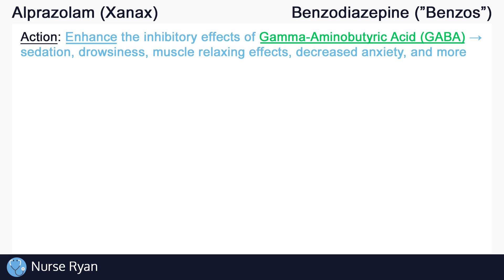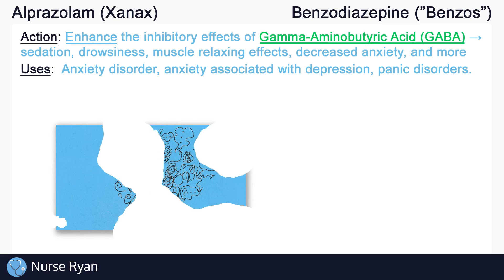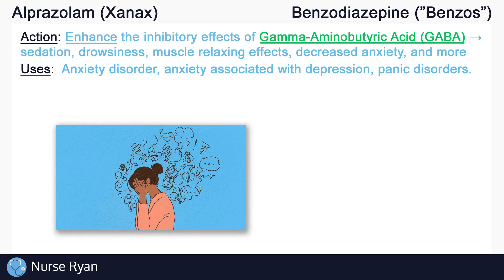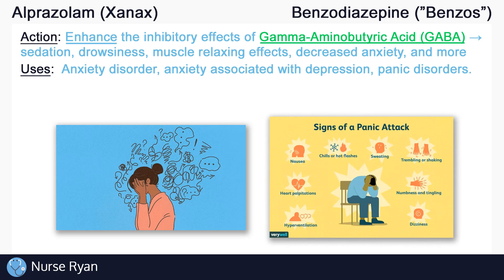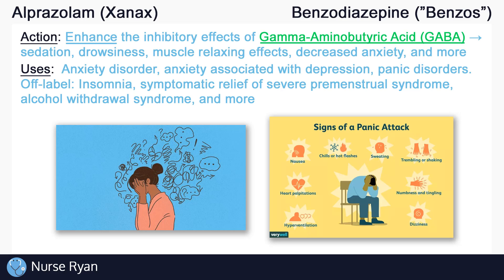Now that we know how alprazolam works, it's a lot easier to work through what it's used for. Alprazolam is often used for the management of anxiety disorder, anxiety associated with depression, and panic disorders. Again, alprazolam decreases anxiety and produces calming effects. Some off-label uses include insomnia, symptomatic relief of severe premenstrual syndrome, alcohol withdrawal syndrome, and more.